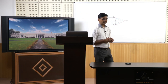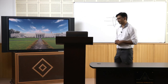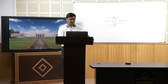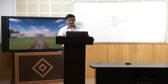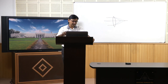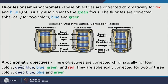More complex lenses are called semi-apochromats or fluorites. These objectives are corrected chromatically for red and blue light, are closer to the green focus, and are spherically corrected for two colors — blue and green. The most expensive objectives are apochromatic objectives, which are corrected chromatically for four colors — deep blue, blue, green, and red — and are spherically corrected for two or three colors: deep blue, blue, and green.